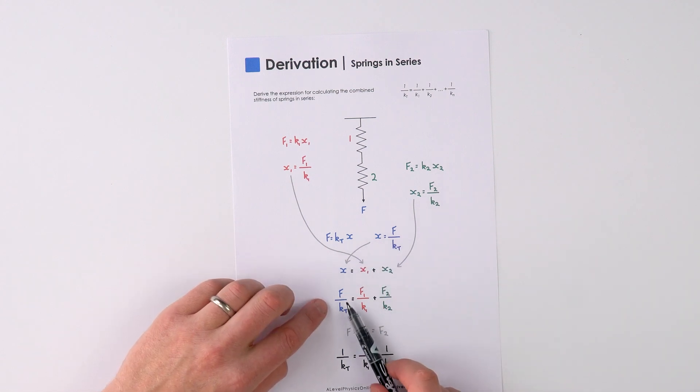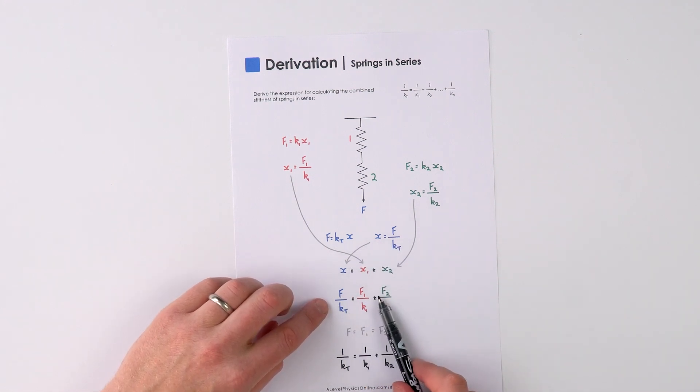When we substitute that back in, we can say that f over kt is equal to f1 over k1 plus f2 over k2.